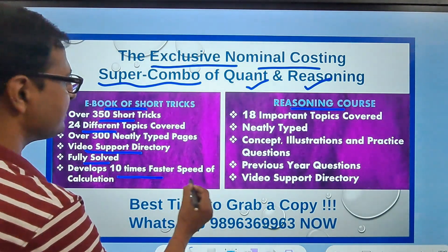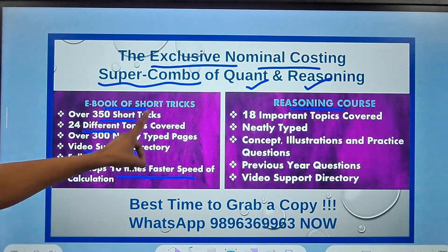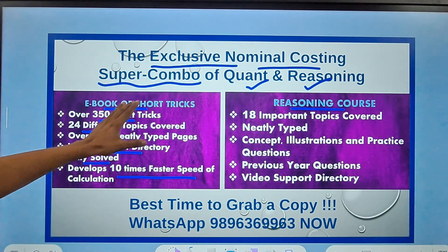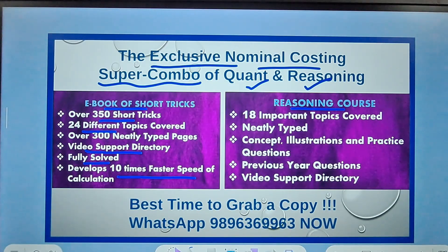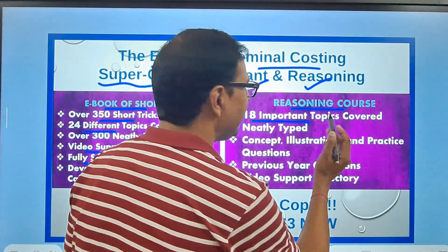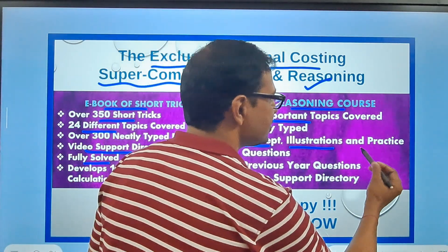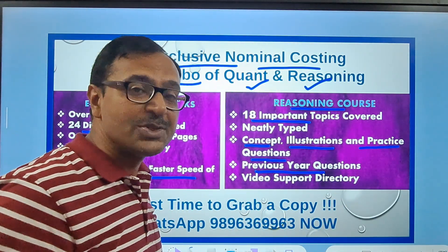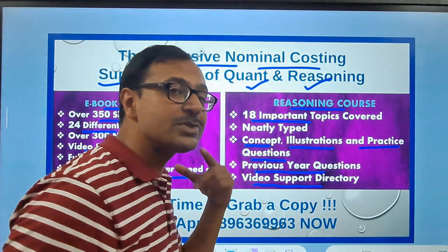It enables 10 times faster speed of calculations. All school students and parents watching this — gift your child this amazing super combo of quant and reasoning. In the reasoning course there are 18 different topics covered: concepts, illustrations, practice questions, previous year questions — you have everything, plus video support.